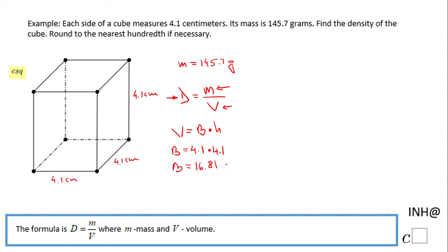That's 16.81 centimeters squared. The volume will be this base, 16.81, times the height of 4.1 centimeters. So the volume will be 68.921 cubic centimeters.